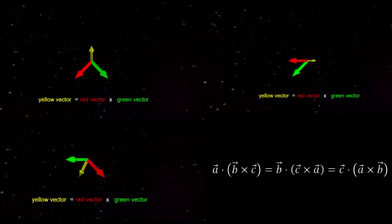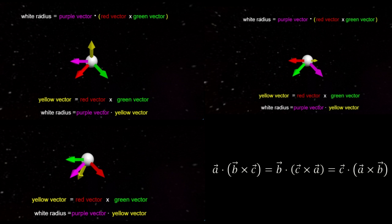It turns out you can get the same result by flipping the vectors around as long as they stay in cyclic order.